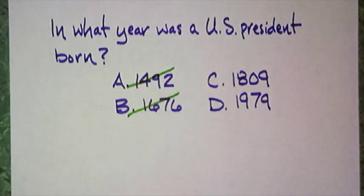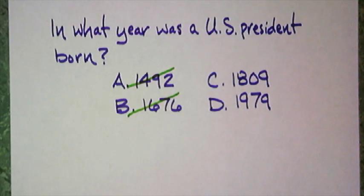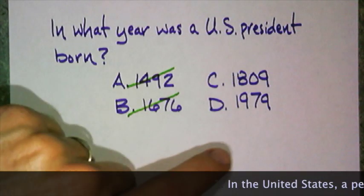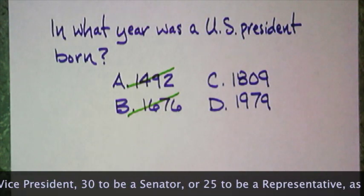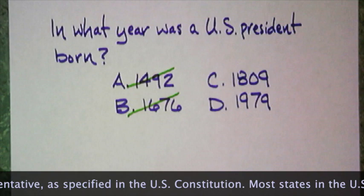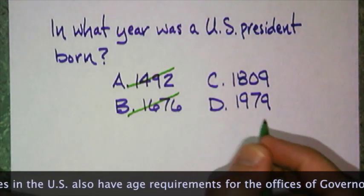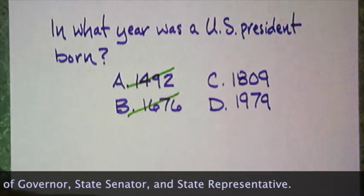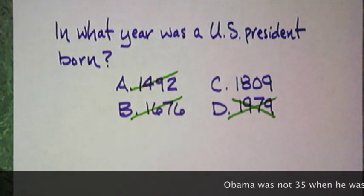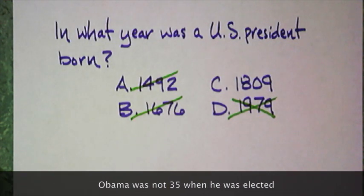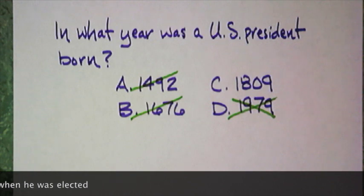Now I'm getting down to two. 1809? Possible — don't know for sure. 1979? Is that possible? It's 2014. Someone born in 1979 would be how old now? You have to be 35 years old to be president. Someone born in 1979 would definitely be too young. So D is going to be out. The only answer, if there's a correct answer here, is C.